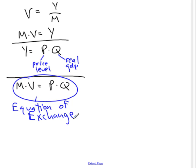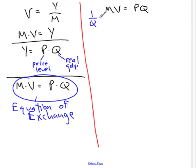Now, we can make one more manipulation here. Let's multiply both sides of the equation of exchange by 1 over Q. Then we'll get something else.